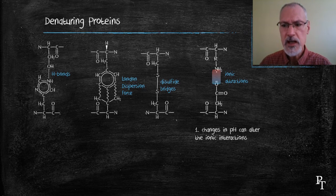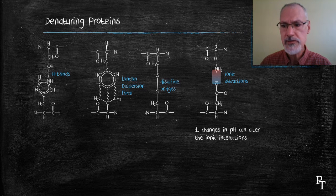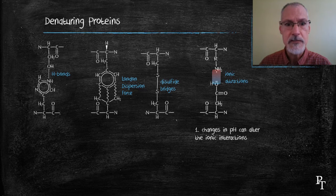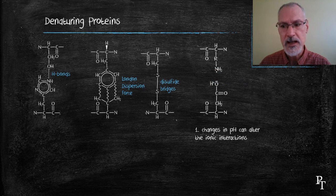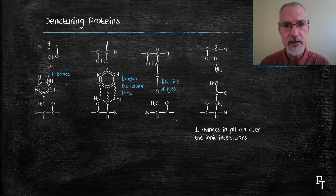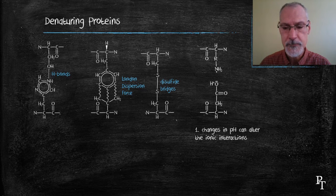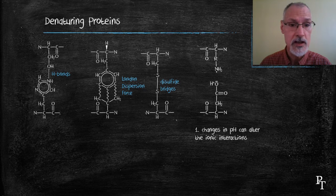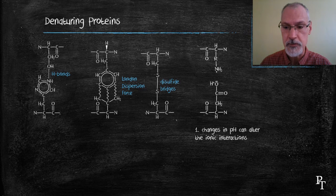If we alter the pH of a solution, we can induce the zwitterion to take on a different charge. For instance, if I lower the pH of a solution, I can interfere with that ionic interaction. That could lead to an unfolding of our particular protein and thereby cause it not to function any further.